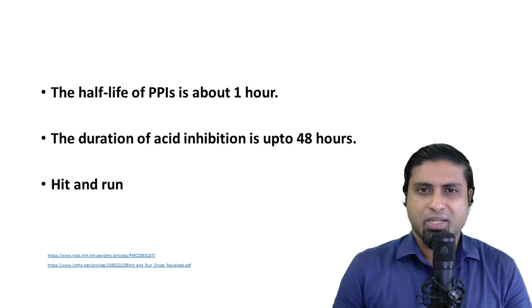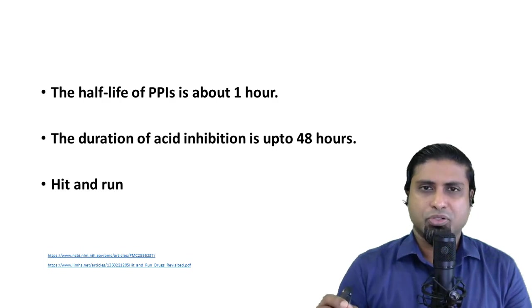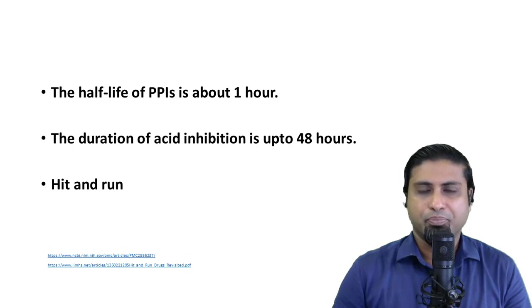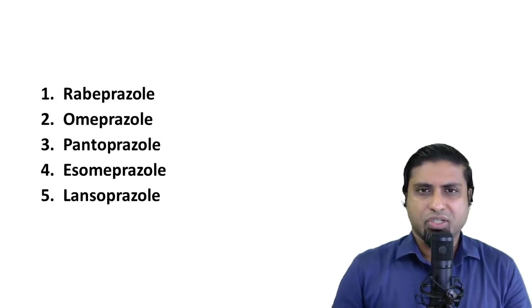There is no trace of the perpetrator. Similarly, a proton pump inhibitor inhibits the proton pump with a duration of action of around 48 hours, but if we measure the plasma concentration after two or three hours, there will be no trace of the drug. This is why we call proton pump inhibitors a hit and run drug. Examples of proton pump inhibitors include omeprazole, which is the prototype drug. We will continue this discussion in the next video.